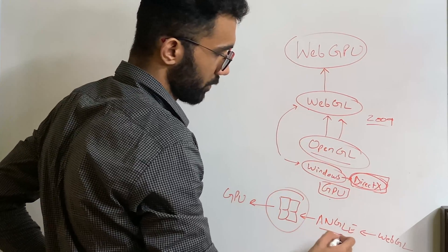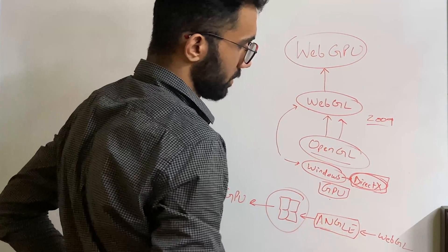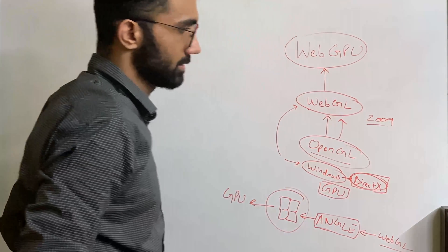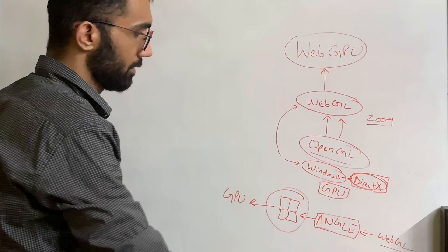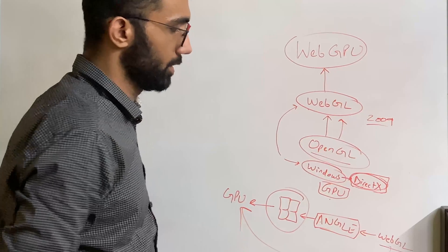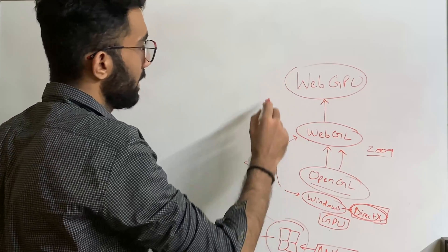So this was, this means that there was a performance hit at this point. So WebGL wasn't as fast as it could be, theoretically, if it was directly communicating with the GPU. So in order to fix this whole mess of things, there was a new standard developed called Vulkan.